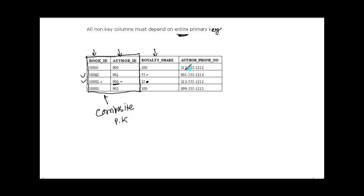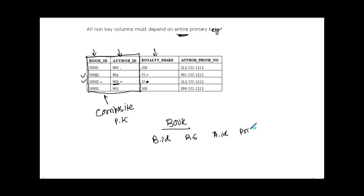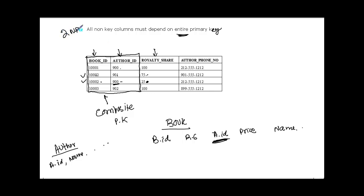The solution is to move author information to a separate table. Keep author ID in another table along with author name, author phone number, address, and all other author details. In the book table, I store book ID, royalty share, and the author ID as a foreign key. As long as I store the author ID, this design conforms with the second normal form.